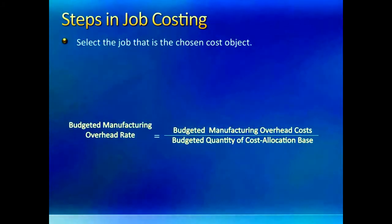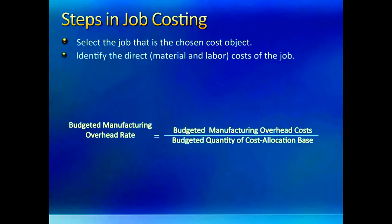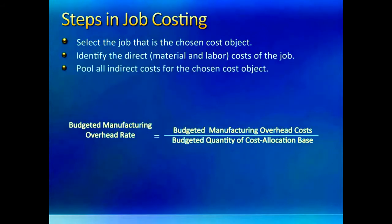Let us go through the steps needed to arrive at the product cost of a job under a job costing system. First, decide the job for which cost is to be calculated. Second, pull together all direct costs for the job — typically material and labor. Now we will need to deal with indirect manufacturing costs.